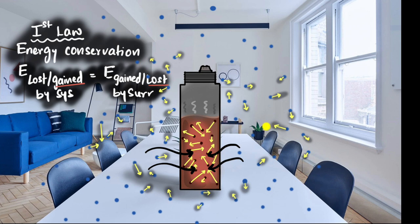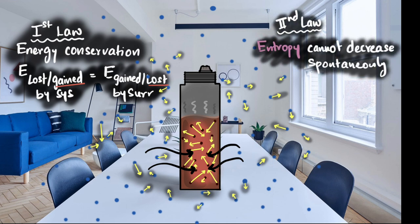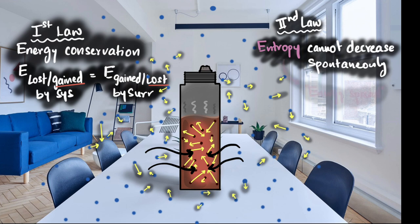That is the second law of thermodynamics, and it says that entropy cannot decrease spontaneously. I know this brings up a lot of questions, so let's first try to understand what entropy is. There are many ways to think about entropy, but the way I like to think about it is: it's a measure of how much your energy has spread out.